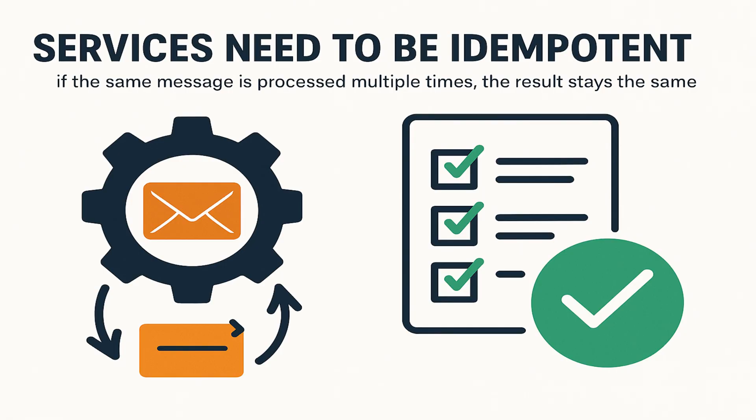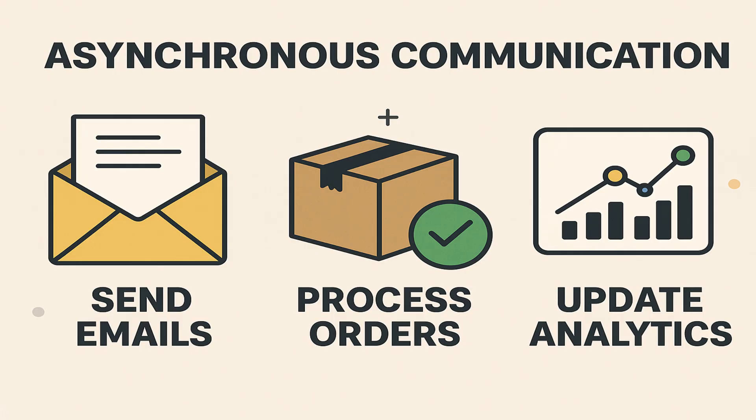So just like synchronous communication has its timeout, retry, and circuit breaker, asynchronous communication has these patterns to keep your system reliable and stable. Asynchronous communication is perfect for things like email processing, processing orders, or updating analytics — tasks that don't need an instant reply but must be done reliably.